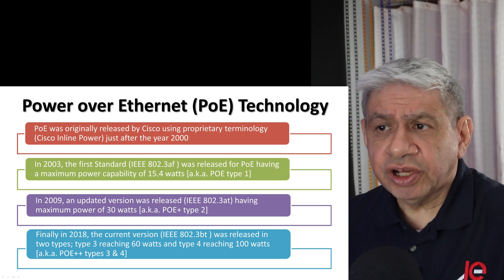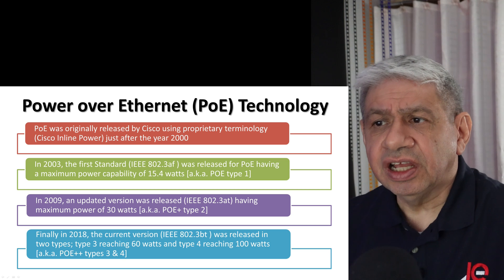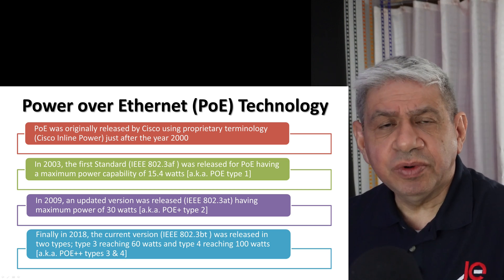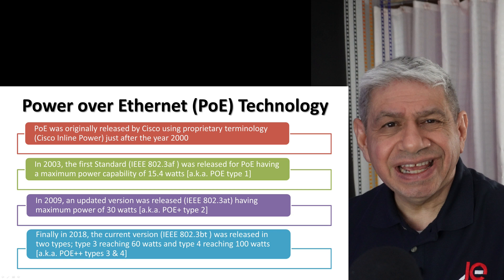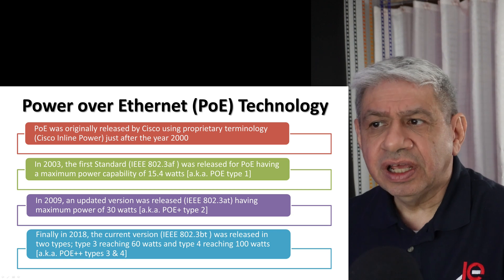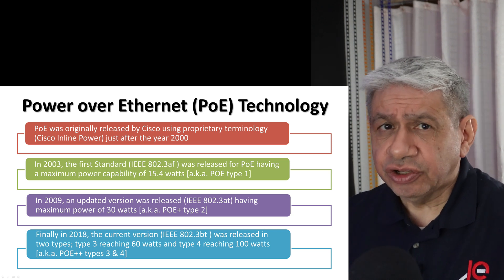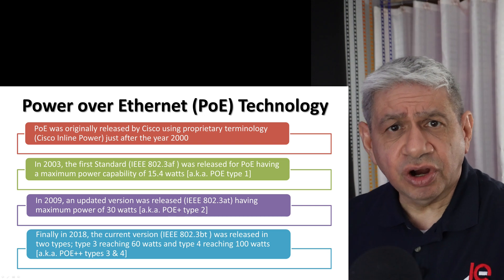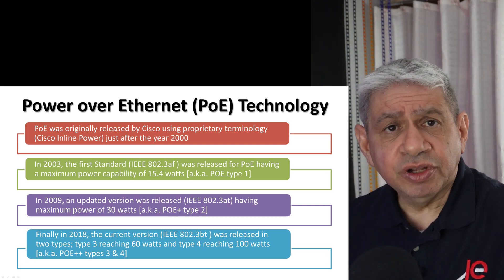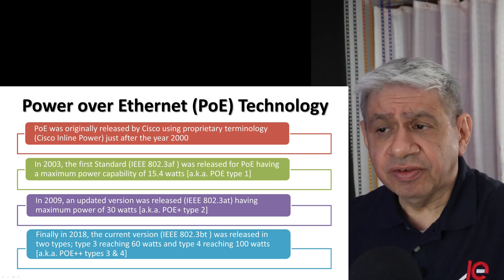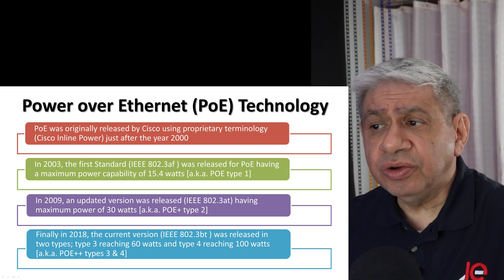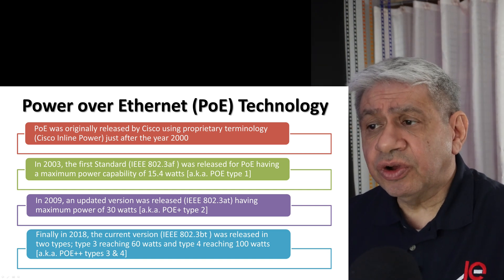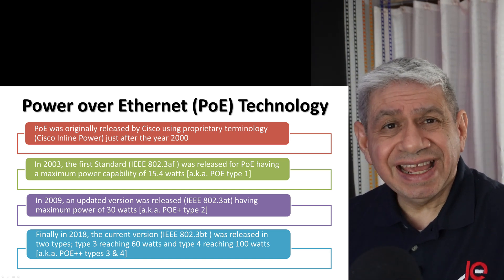Looking at the IEEE standard designations: the first one from 2003 was called 802.3af, and you'll see a lot of notation referencing that. When they came up with the newer Type 2 higher-wattage version, it was called 802.3at.